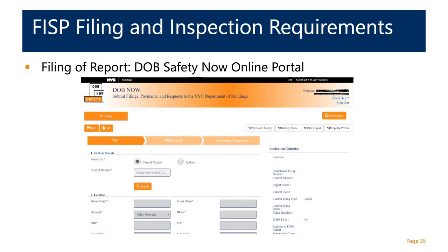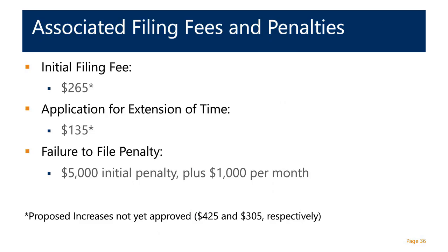I will touch briefly on the filing fees and changes from previous years. The initial filing fee is still $265 per report, set across all reports regardless of whether the building is safe, unsafe, or SWAMP. There is also an option to file for extensions of time to correct conditions, with an application fee of $135. It should be noted that there is a proposal to increase these two fees to $425 and $305 respectively, though that hearing has been postponed. Building owners and managers should expect those fees to increase in the future.